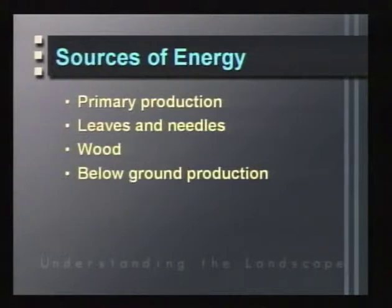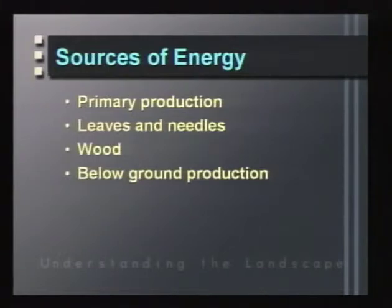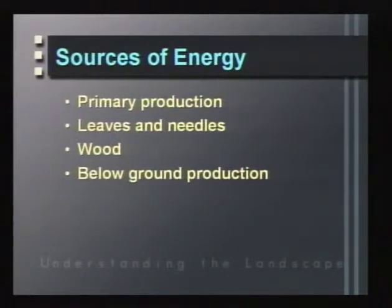The major sources of energy in aquatic and terrestrial ecosystems are quite often the plants — that's the food base. Primary production that occurs within the system, the photosynthesis, provides important energy. Leaves and needles that fall into stream and aquatic ecosystems from terrestrial ecosystems are another major source. Large wood from trees provides important food resources and habitat. Below-ground production — the roots, mycorrhizae, and the whole assemblage of organisms beneath the soil — are also major energy sources.